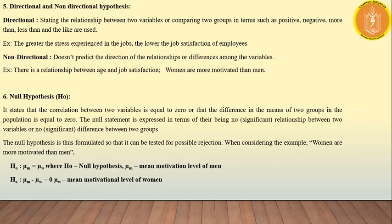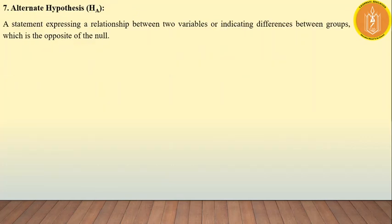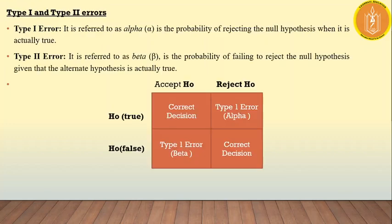The null hypothesis, as the name suggests, does not show any significant relationship between two variables. The alternative hypothesis is opposite — it shows that there is a significant relationship between the two variables, such as independent and dependent variables, or moderating and mediating variables.